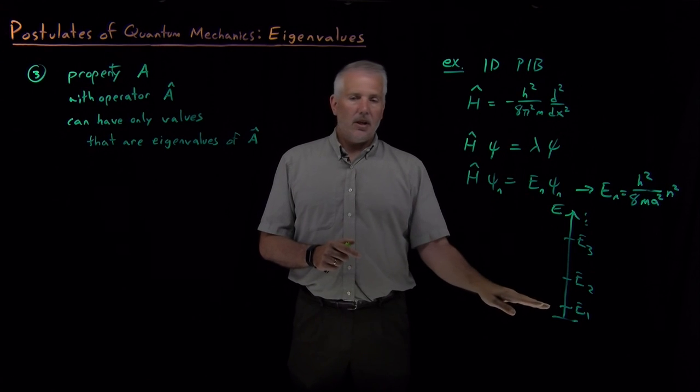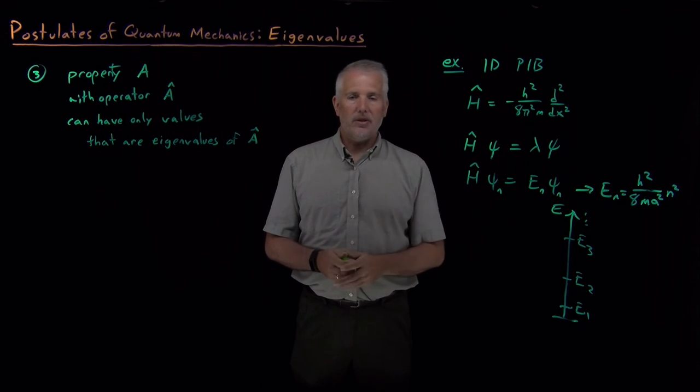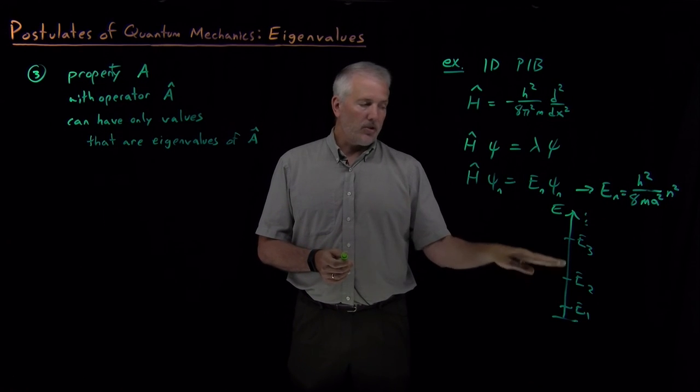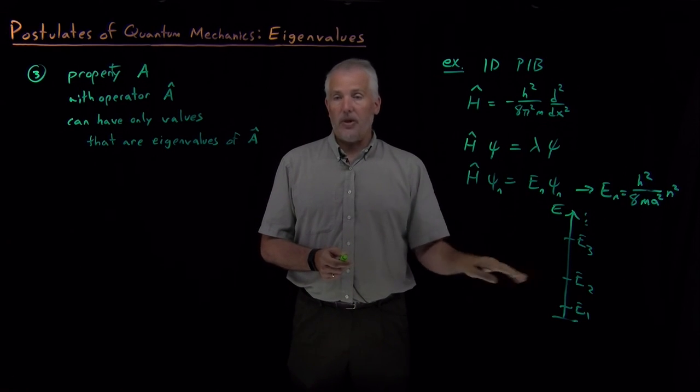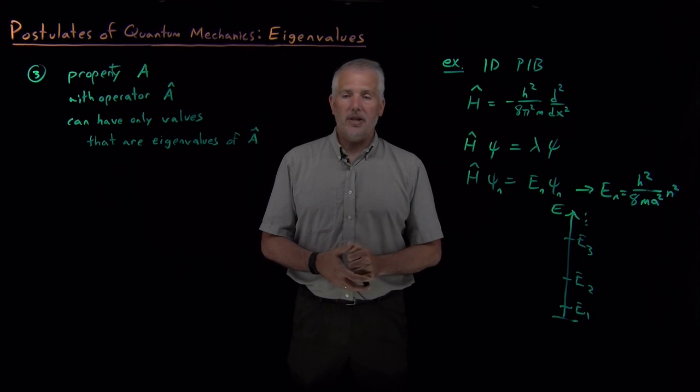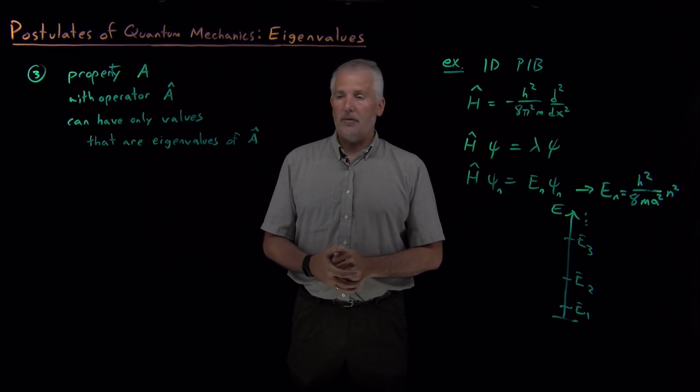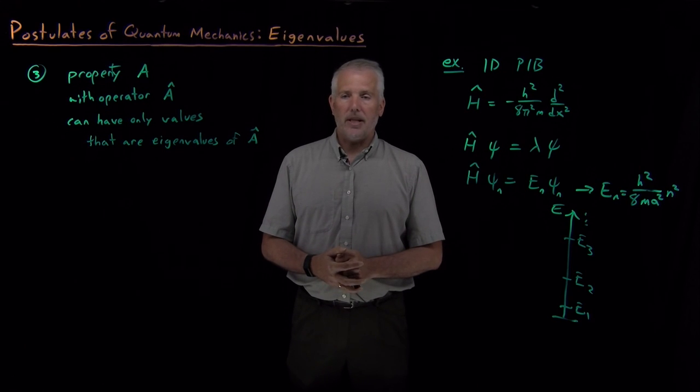What it hasn't told us yet is which values are the ones that we're actually going to see. If I have a quantum mechanical system, it's allowed to have energy E1 or E2 or E3. Which one is it actually going to have? What's the energy I can expect to see for that particle? That requires one additional postulate, the fourth postulate, and that's what we'll talk about in the next video lecture.